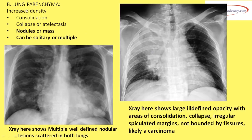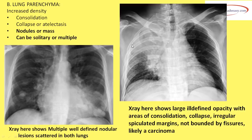The third cause of increased density in the lung parenchyma is nodules or mass. Multiple small, well-defined nodular lesions scattered in both lungs are typical of metastasis. A large mass with ill-defined or irregular spiculated margins, associated with areas of consolidation and collapse, that does not respect fissure boundaries is most likely a bronchogenic carcinoma.